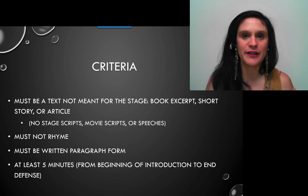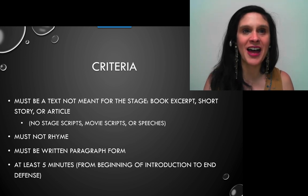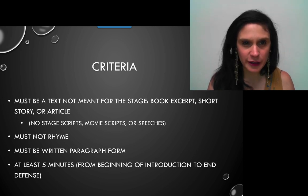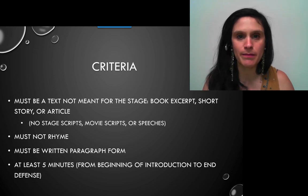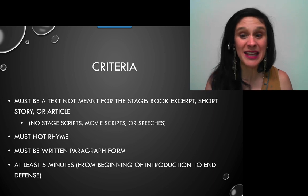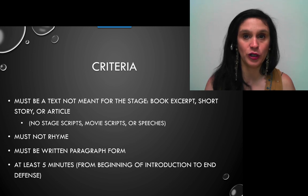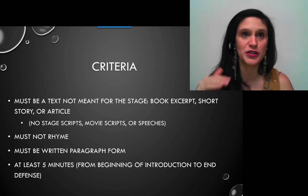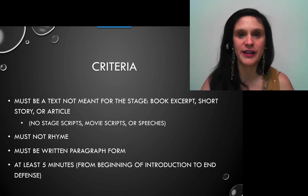The basic criteria for this assignment: prose, when defined as a literary genre, can mean anything written in paragraph form. I'm restricting it more for this class because in performance of literature we focus on scripts that are not meant for the stage — they begin as a novel, a short story, or an article. You cannot choose something meant to be performed: no stage scripts, no movie scripts, no speeches. It has to be meant to be read.